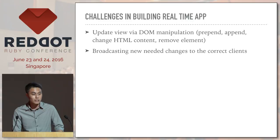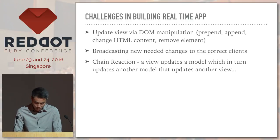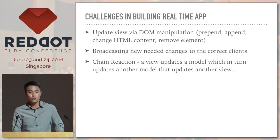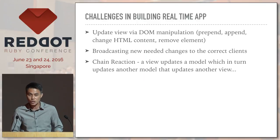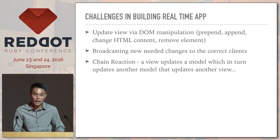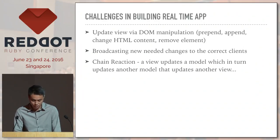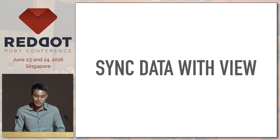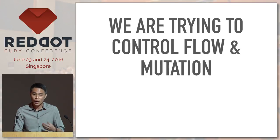The next challenge is broadcasting — sending the right message with the needed changes to the right clients. We also need to look at chain reactions: when the application is sufficiently complex, one view updates a model, which updates another model, which then updates another view. All these challenges arise because we're trying to sync the data with the view and control the flow and mutation of all the data.